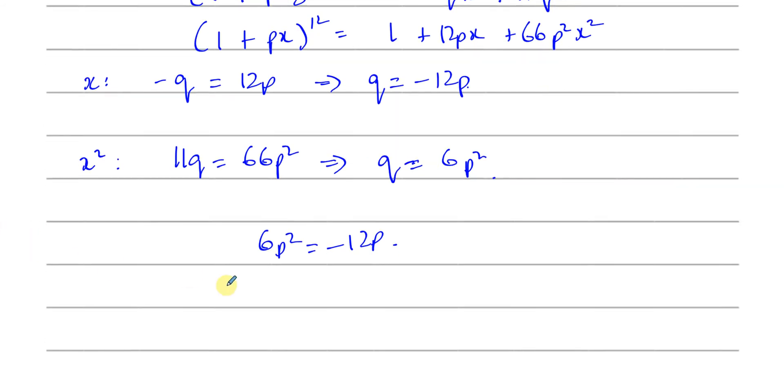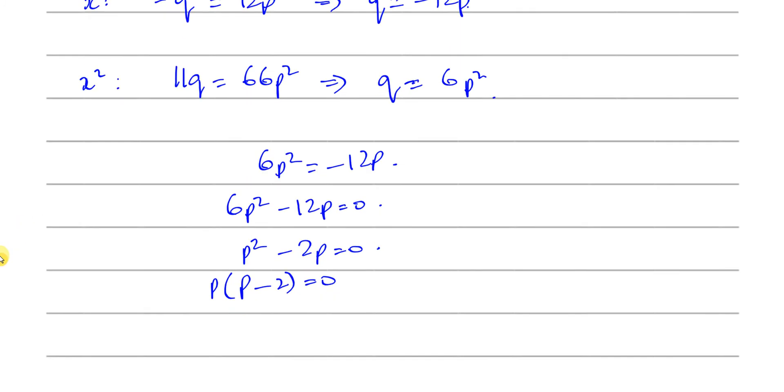If I bring these together, I can have 6P squared minus 12P is equal to zero. I can divide by 6. P squared minus 2P is equal to zero. And I can take out common factor of P.